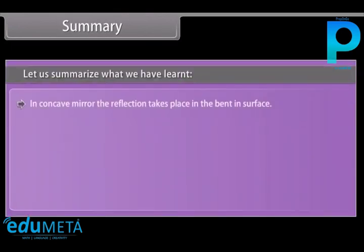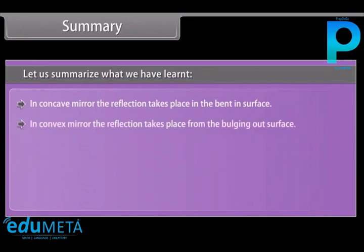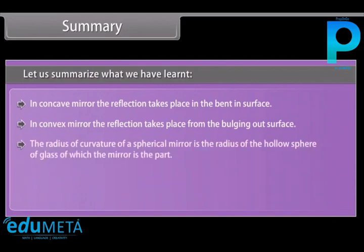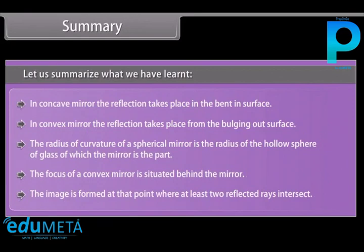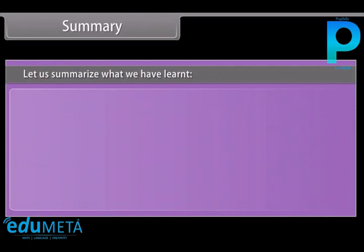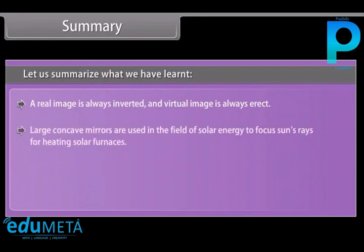Summary: in a concave mirror, reflection takes place at the bent-in surface; in a convex mirror, reflection takes place at the bulging-out surface. The radius of curvature is the radius of the hollow sphere of glass of which the mirror is a part. The focus of a convex mirror is situated behind the mirror. An image is formed at the point where at least two reflected rays intersect. A real image is always inverted and a virtual image is always erect. Large concave mirrors are used in solar energy to focus the sun's rays for heating solar furnaces. The object distance U is always negative in mirrors.